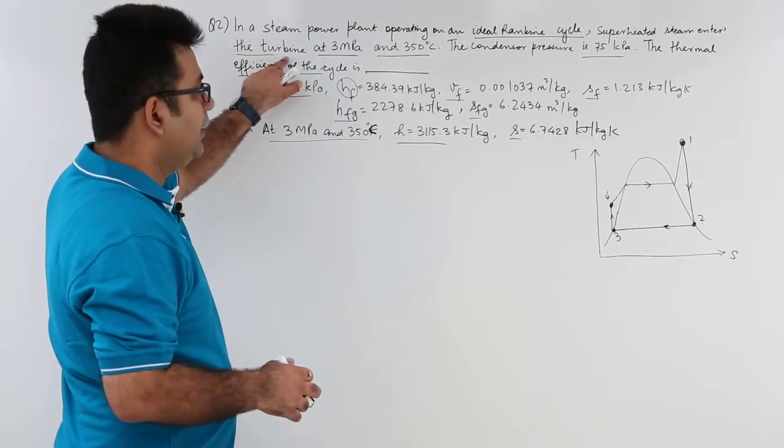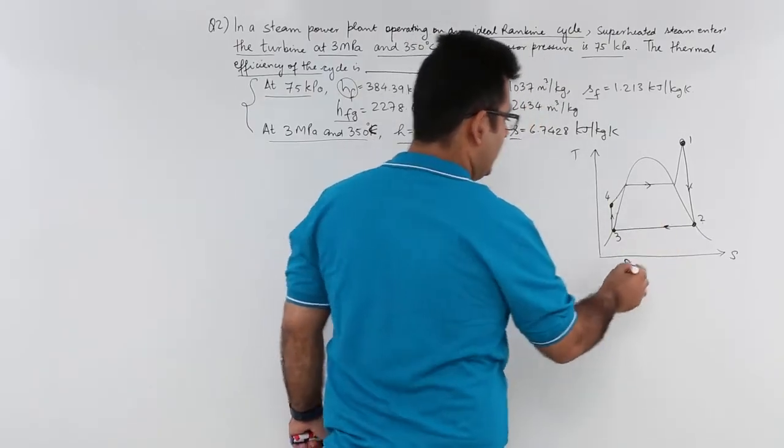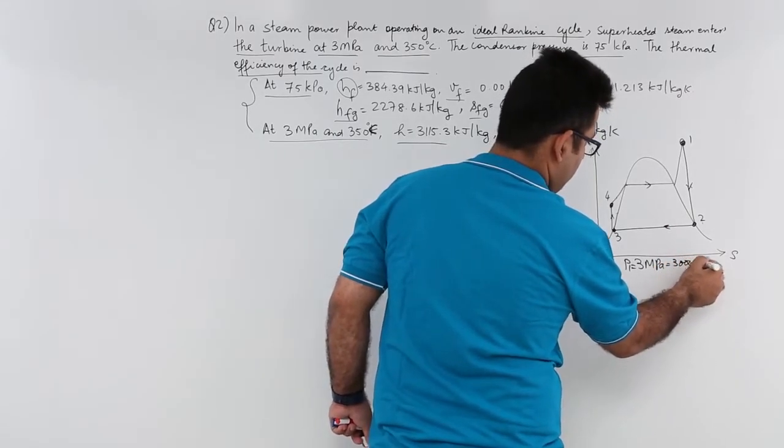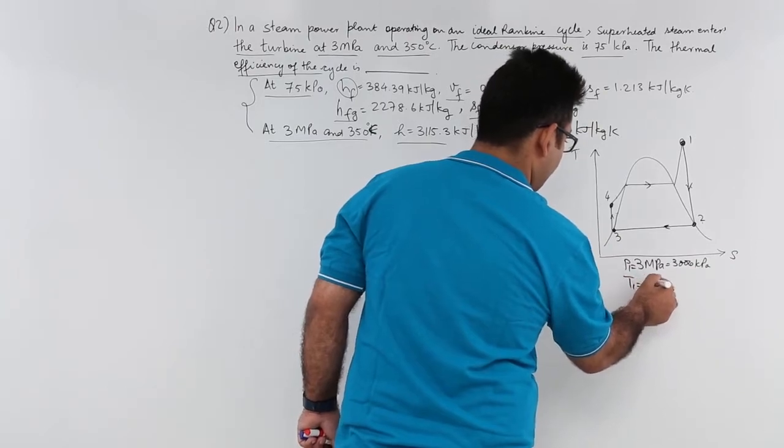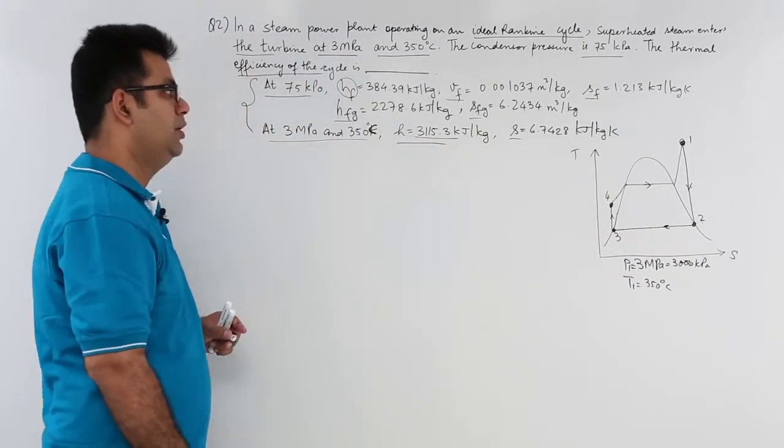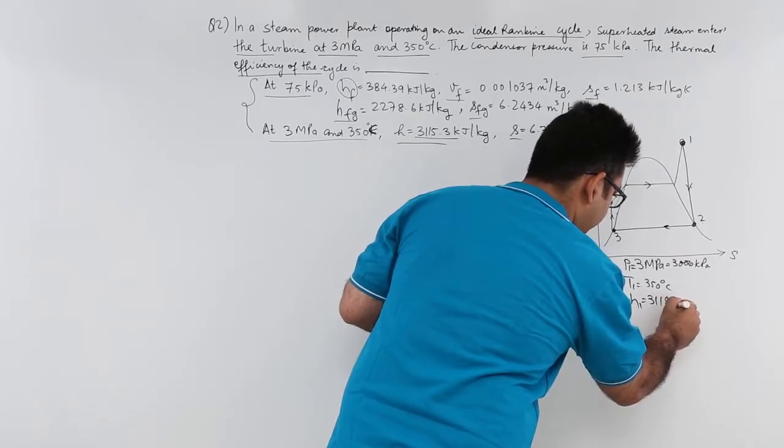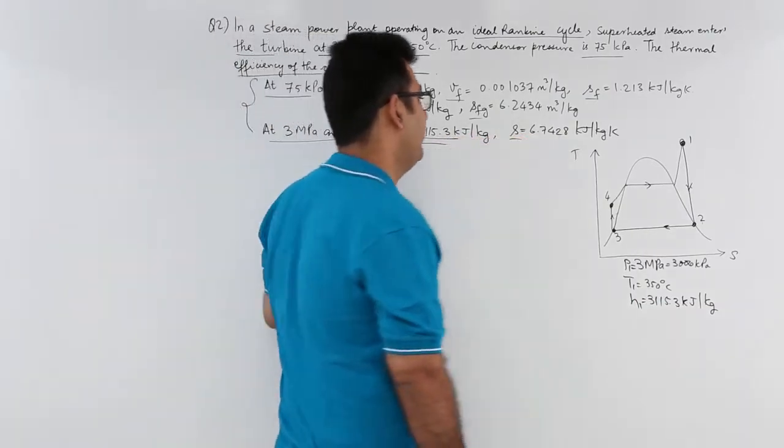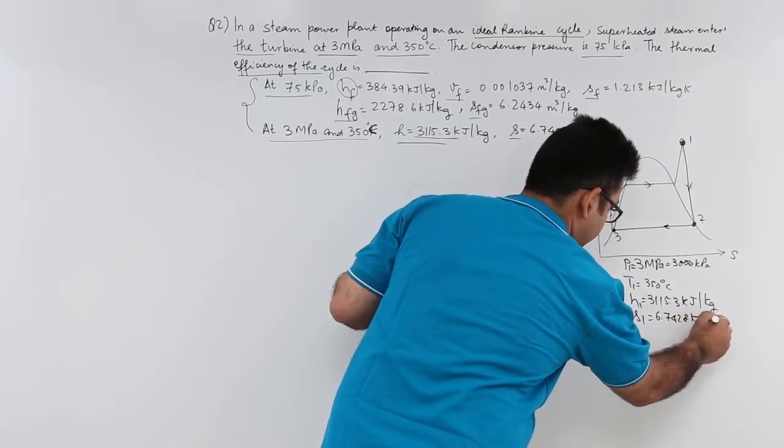Now your turbine inlet is 3 MPa and 350 degree Celsius. So, P1 is 3 MPa which is 3000 KPa. T1 is 350 degree Celsius. At state 1 the enthalpy is 3,115.3 KJ per kg. And similarly, specific entropy is 6.7428.